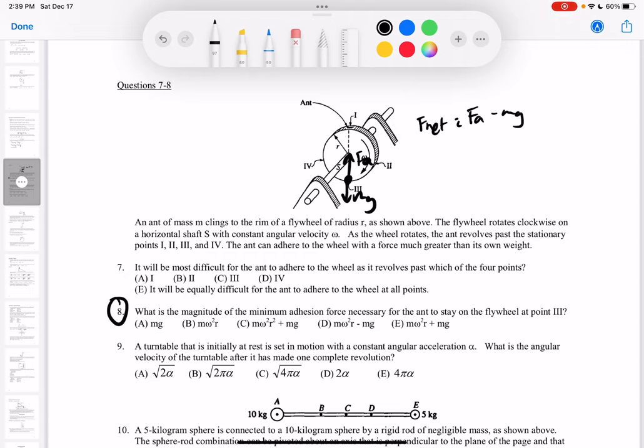My F-net, instead of being M-A, I actually want to do M-V squared over R, but since they gave me omega and not V, we need to change that. So it would be M omega squared R.